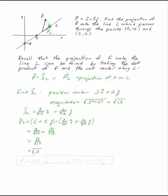So the projection vector, the projection of F onto the line L, is 3.61. That's the component of that, that's how long that is, that's the magnitude.